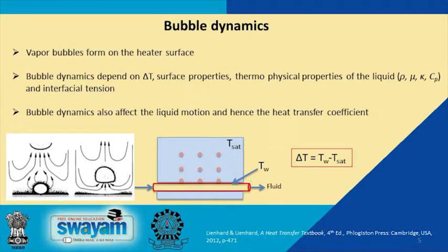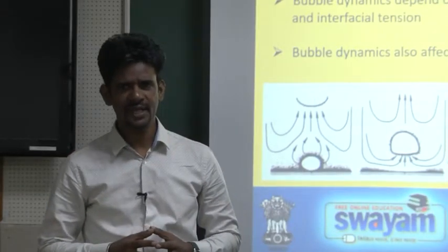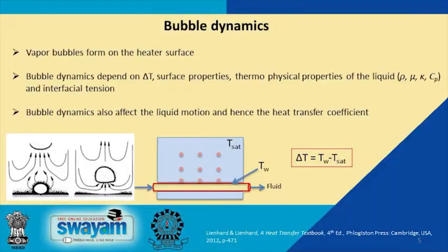Boiling is a very complicated process where bubbles form on the heater surface and grow. Due to the density difference between the vapor and the liquid, buoyancy lifts the bubble from the surface to the liquid interface. As the bubble moves up it induces local mixing of the fluid, which increases the heat transfer coefficient. This bubble dynamics — the formation, growth, disengagement, and elevation — are strongly coupled to the temperature difference, thermophysical properties of the liquid, and interfacial tension.